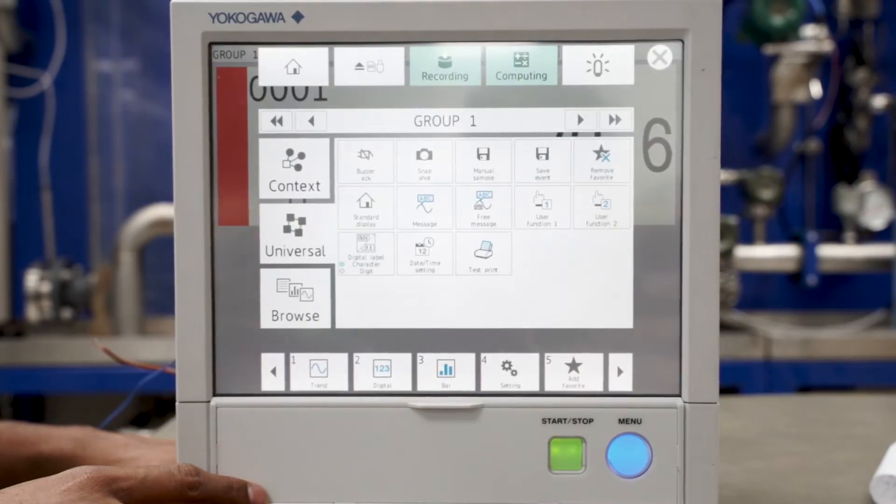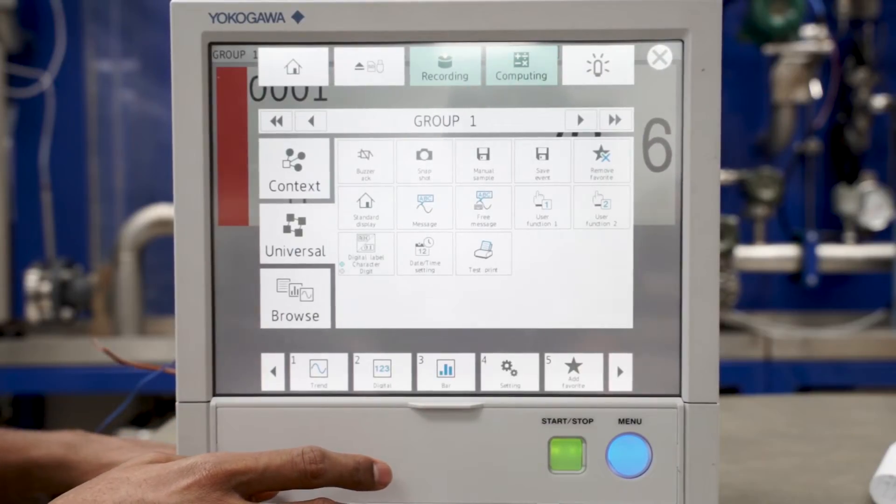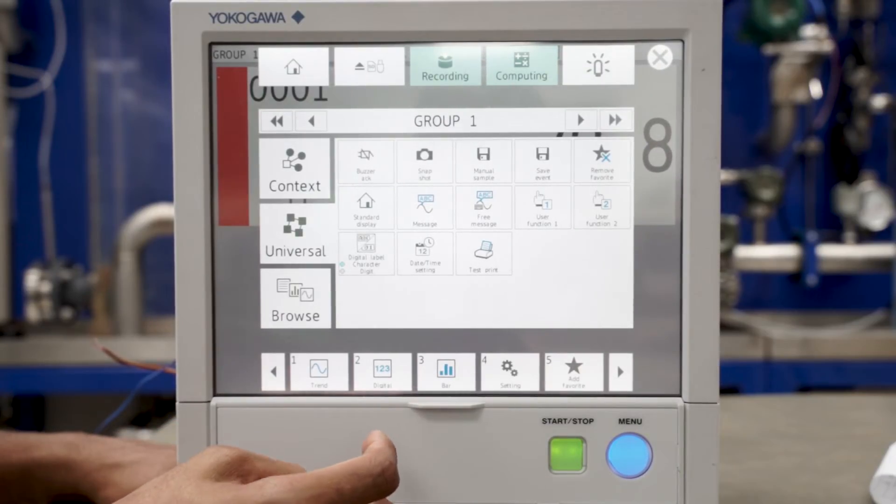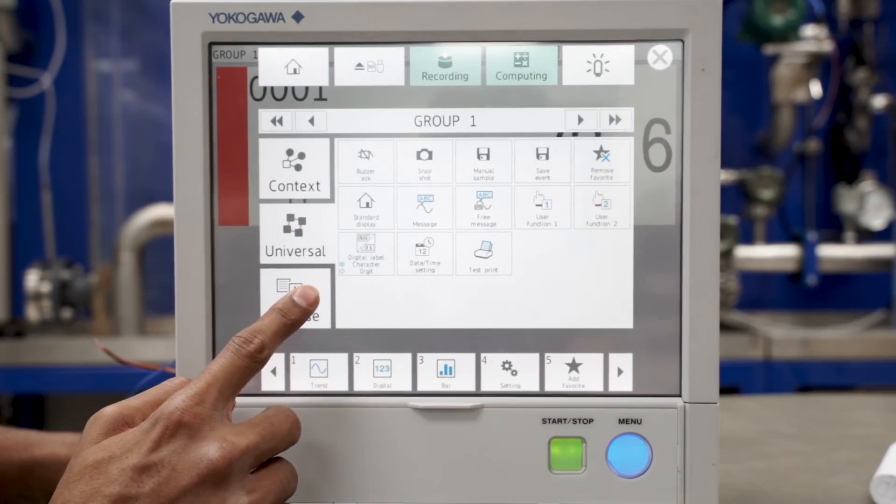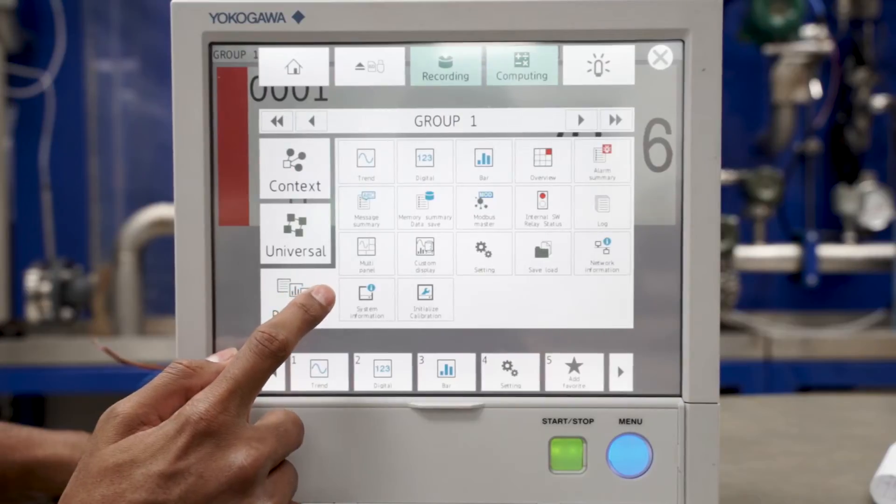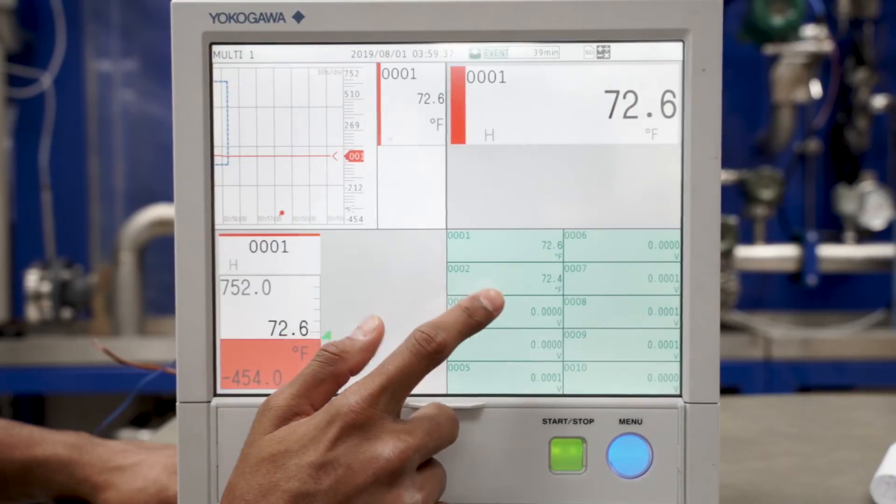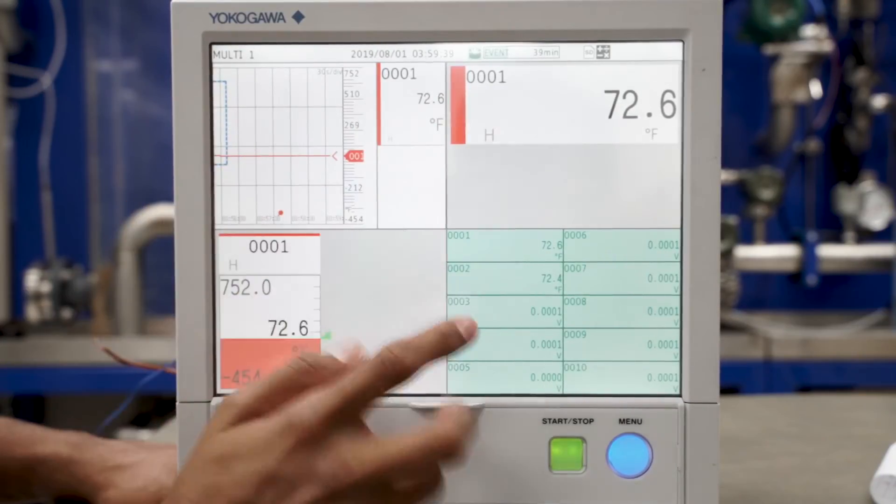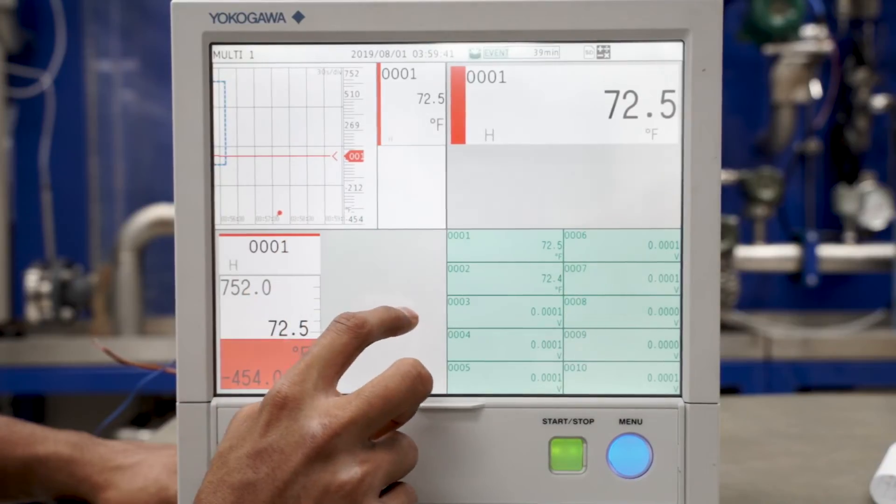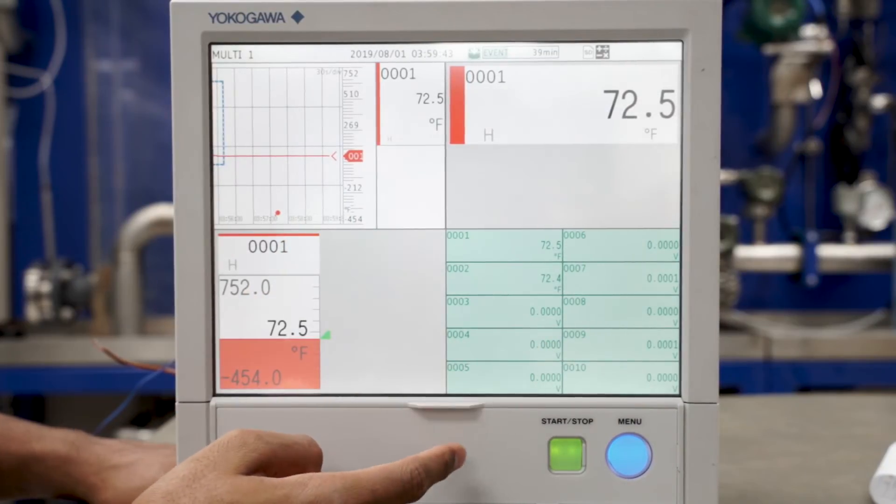One unique feature of the GXGP data recorders are that they allow one display screen to house multiple smaller trends or graphs in a custom layout tailored to the preferences of the operator. Simply go to browse, select multi-panel, and now you're able to view the trend, digital display, bar graph and the overview all in one screen.